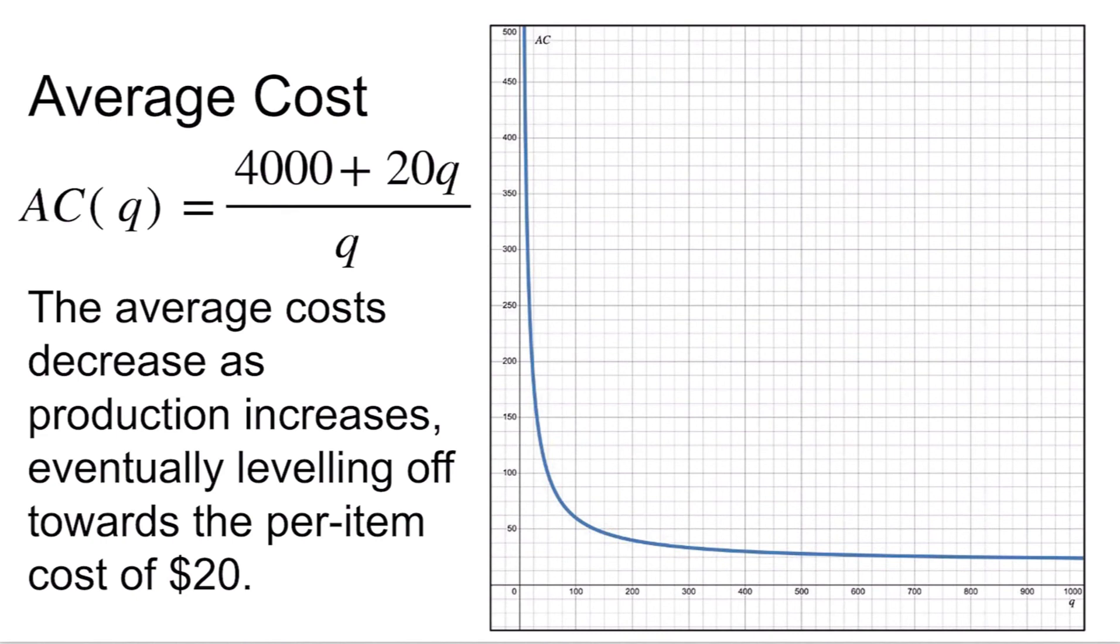But this curve also eventually levels off toward the per-item cost of $20. That means at a certain point, no matter how many items we produce, our average cost is going to run us about $20 per item.